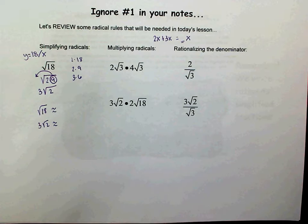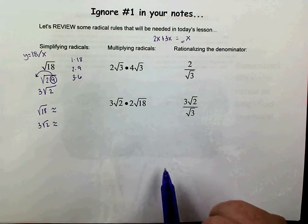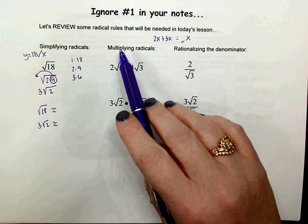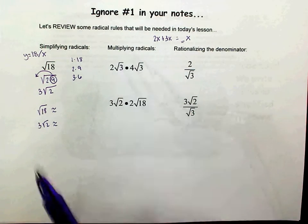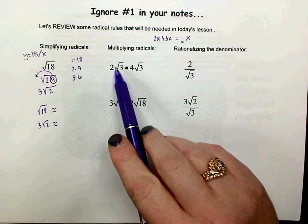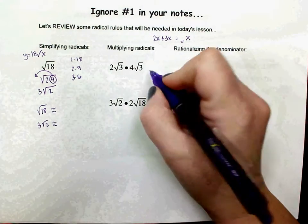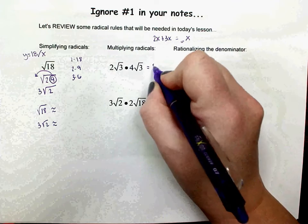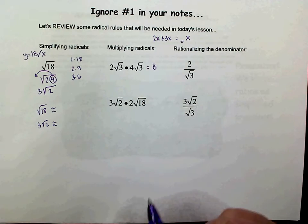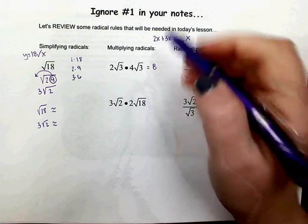But you cannot add radicals if they don't have the same thing under the radical. We're just simplifying by multiplying — focusing on that. So if I multiply the outside numbers, 2 times 4 is 8. I would have an 8 on the outside, and I would also multiply the numbers inside the radical.